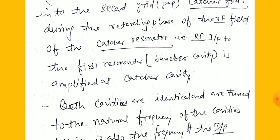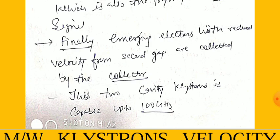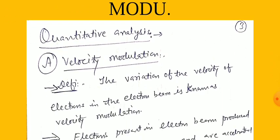The bunching of different groups of electrons in the drift space is called bunching, and it is the result of velocity modulation produced at the first gate. When these bunches enter the second gate — the catcher grid — during the retarding phase of the RF field of the catcher resonator, the RF input of the first resonator is amplified at the catcher gate. Both cavities are tuned to the same natural resonant frequency, which is also the frequency of the input signal. The two-cavity klystron is capable of operation up to 100 GHz.